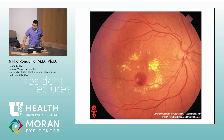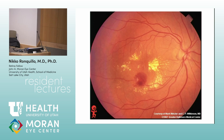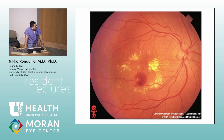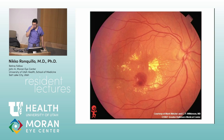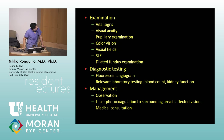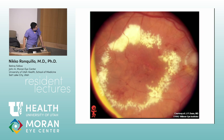Next — retinal arterial macroaneurysm (RAM). It's located on a vessel, usually with surrounding hemorrhage and exudates. RAM can cause hemorrhages in all layers — pre-retinal, intraretinal, subretinal. The key associated systemic condition to check: hypertension.